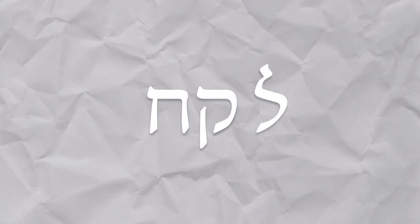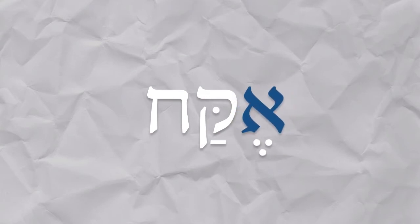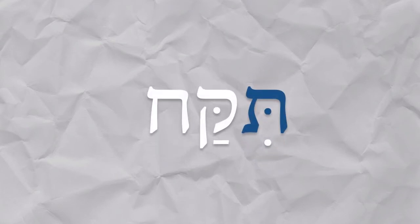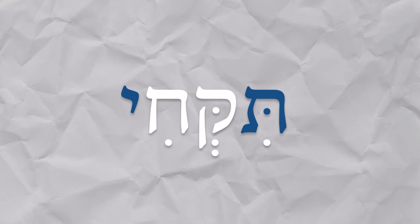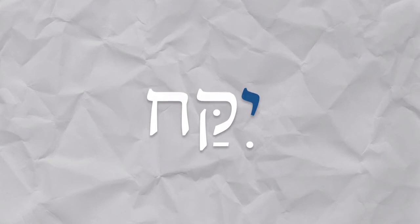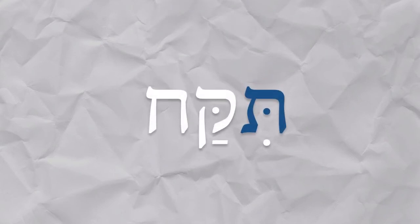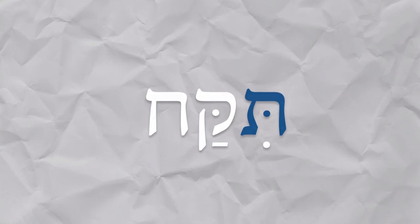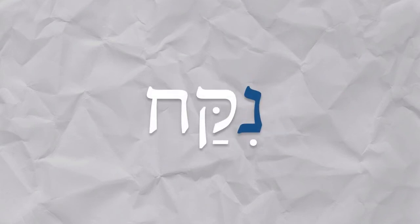Lekakh in the imperfect is going to drop its initial letter, and then we conjugate it like this: ani ekakh. Ata: tikakh. At: tikkh — that one's a little tricky. Hu: yekakh. Hi: tikakh. Anachnu: nikakh.